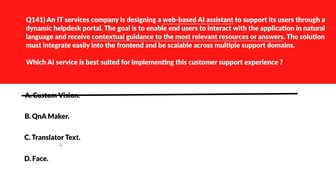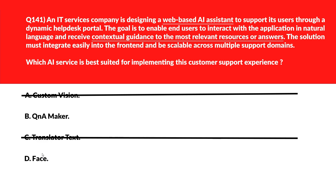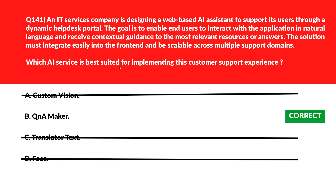Option C says Translator Text, which deals with cross-language conversion but doesn't facilitate FAQ-style interaction, so C is out. Option D is Face API — as the name suggests, it analyzes facial attributes, which isn't aligned with guiding users to informational resources. So the correct answer is option B: QA Maker.